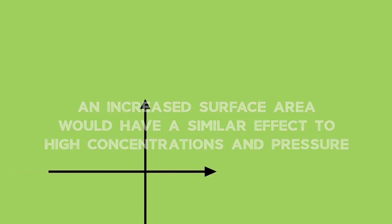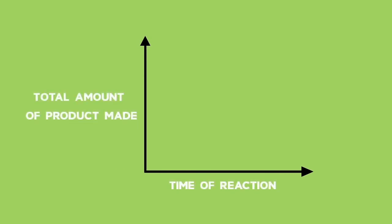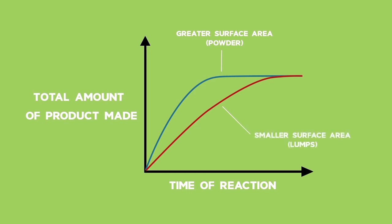An increased surface area would have a similar effect to high concentrations and pressure. We would show this graphically by a steeper gradient. The blue graph shows a faster reaction caused by a larger surface area. It's possible that the solid was crushed or powdered. This means that more particles touch regularly. More collisions in the same time leads to a higher rate of reaction compared with the red graph. This is where there are fewer particles and fewer collisions. Therefore, a lower rate of reaction.